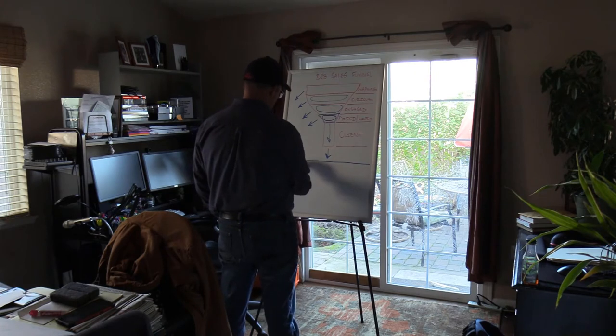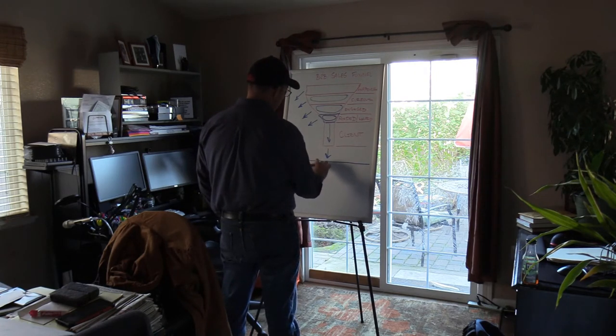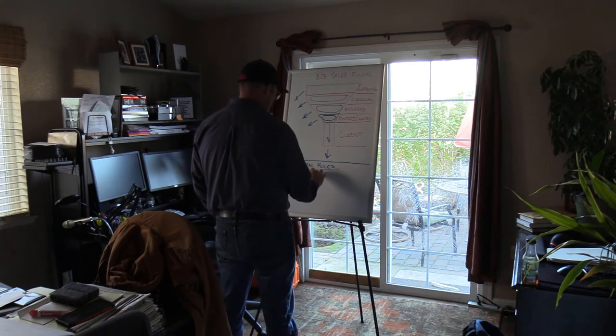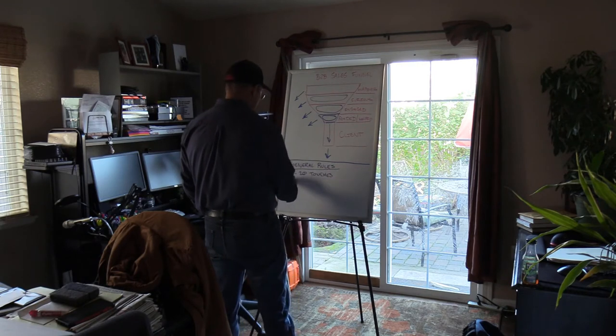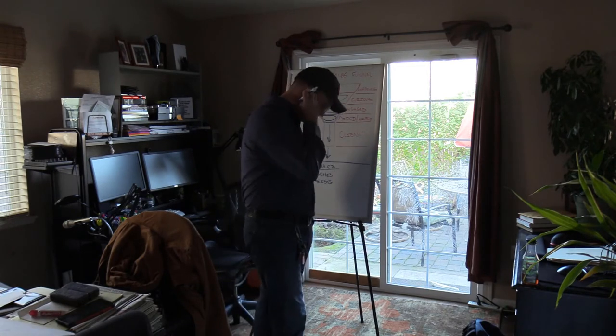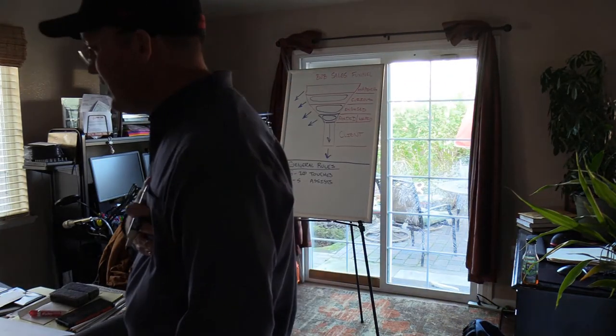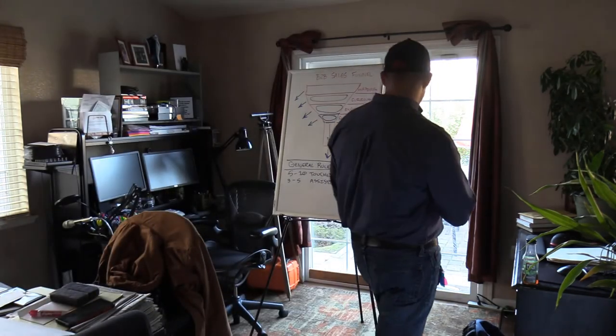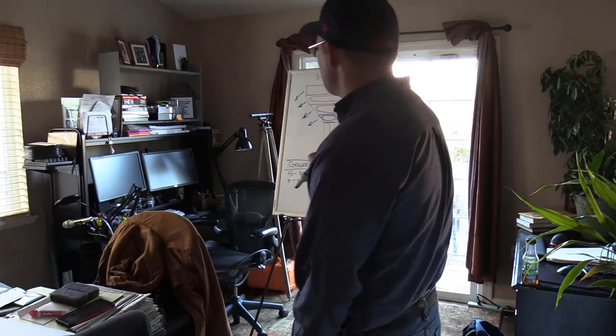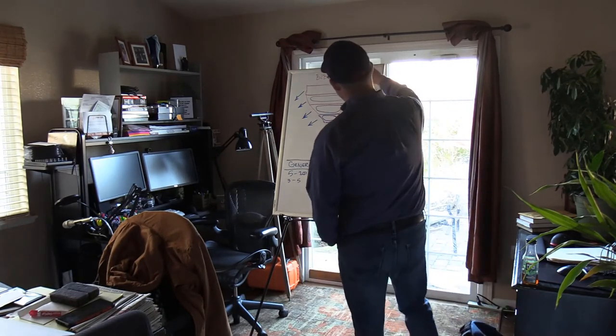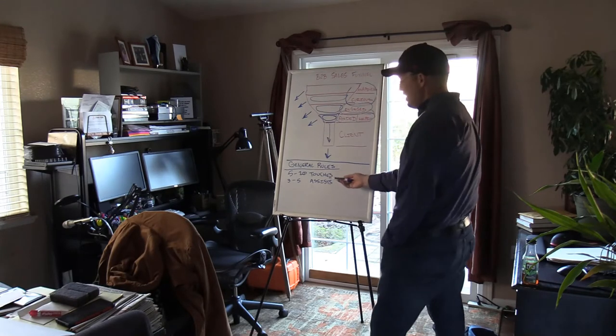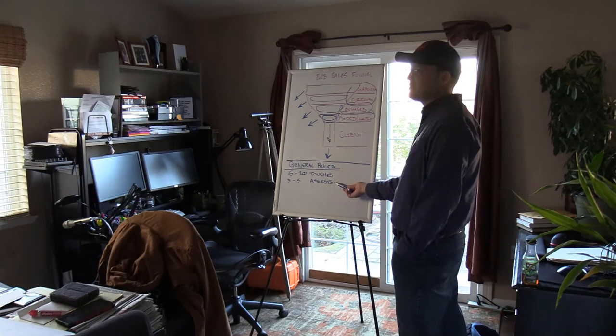So I would say as a general rule, these are some general rules. We're going to have five to ten touches, what I call touches. And I'm going to say somewhere between three and five assists before we get somebody to be a client. So a touch is, you meet somebody at a meeting, it's somebody that we drop off our newsletter to, it's somebody that participates in an online survey, it's somebody that visits our website, all of those things are a touch. And that's part of this, your touches are happening up here. And maybe down here a little bit. The assists are down here. The average real estate agent or broker might call us three or four times with questions before we actually get surveyed.